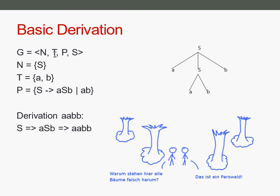The terminal symbols might also be called the alphabet, among other terms. Then we have the production rules, which tell us how to create or derive words from this grammar. And we have a start symbol, which must be one of the non-terminals. As the name suggests, you use it at the beginning when you start to derive strings from the grammar.